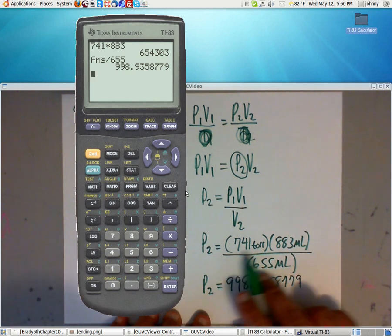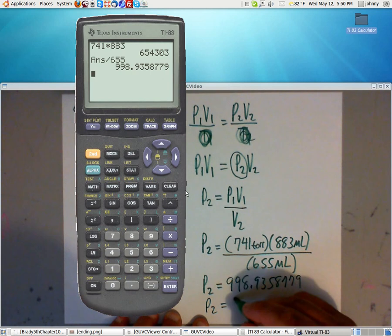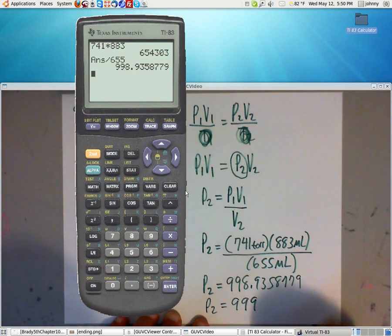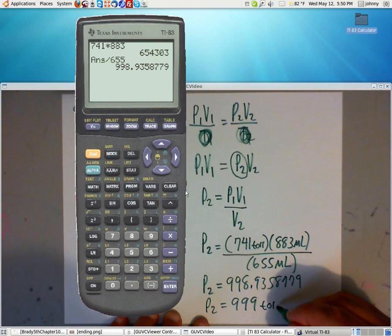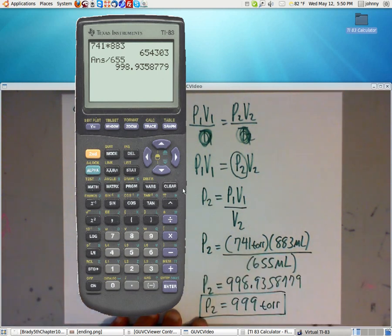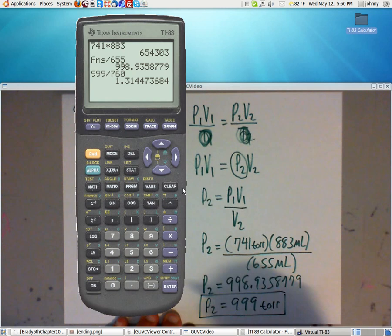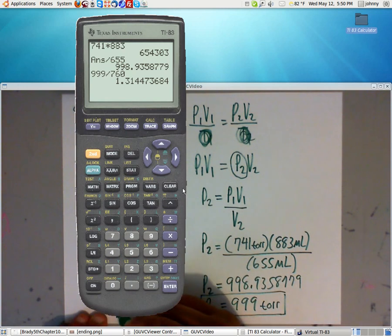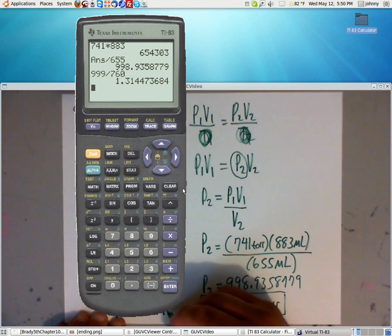Now, if you'll stop and look, we only need 3 sig figs, so my P2 is going to be 999 torr. What's the units for P in this one? Torr. Now, if you need ATMs, you just divide that number, you divide 999 by 760, and you'd have your ATMs, it would be 1.31 ATMs.